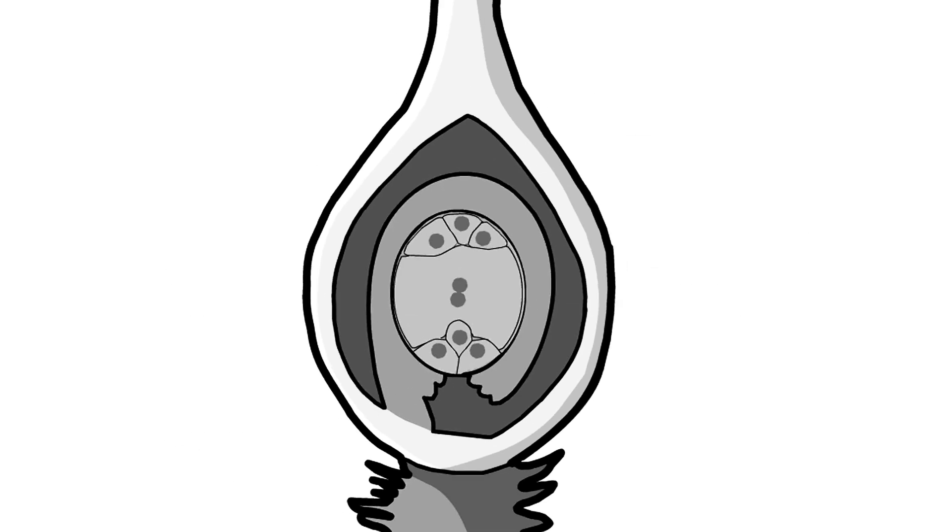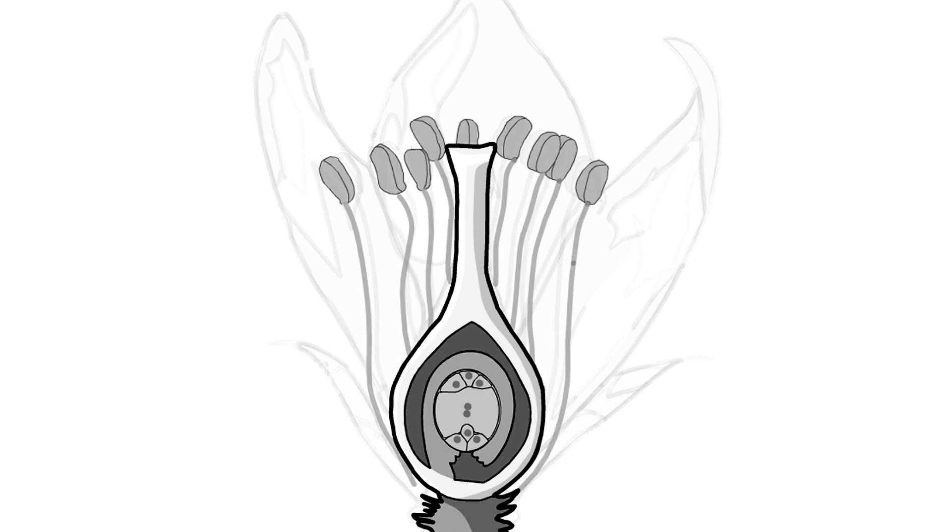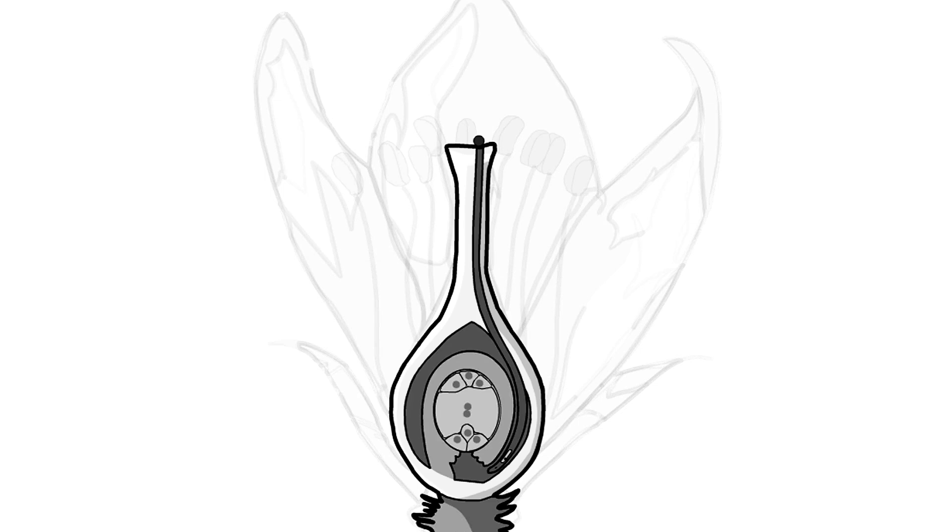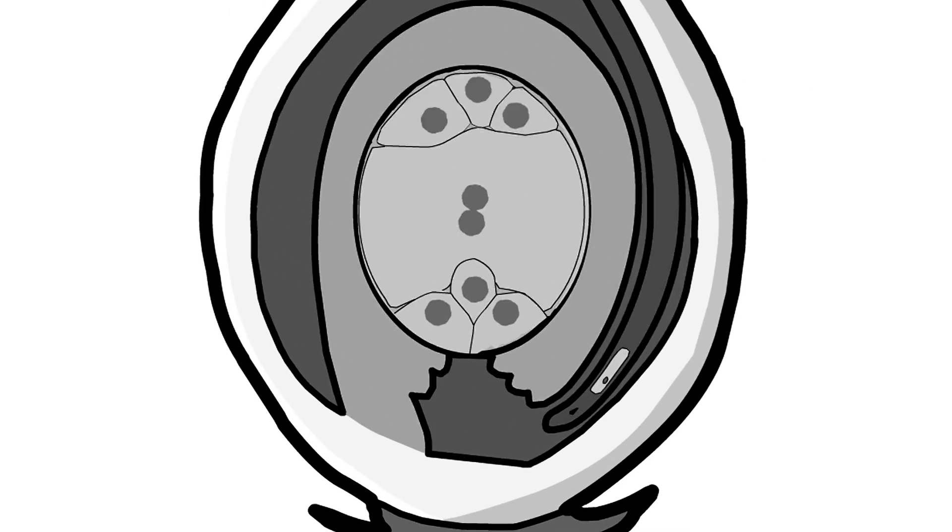Before this can happen, the male gametes, the sperm, must travel to these cells within the male's reproductive reach. To reach the embryo sac, a pollen grain that has landed on the stigma begins to germinate, sending a long pollen tube through the style and into the ovary.